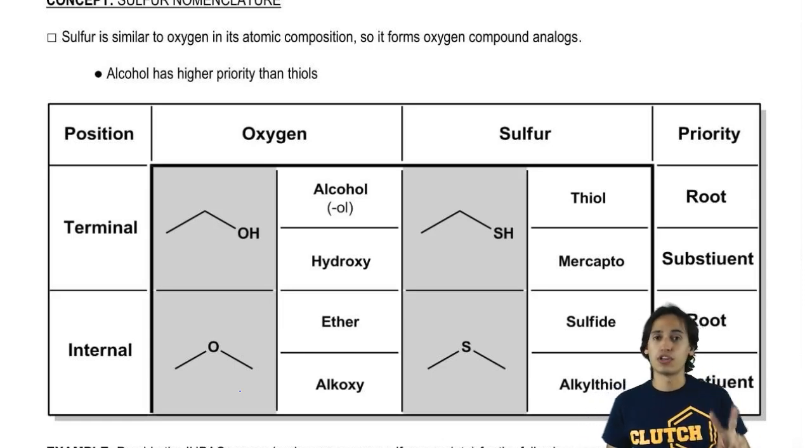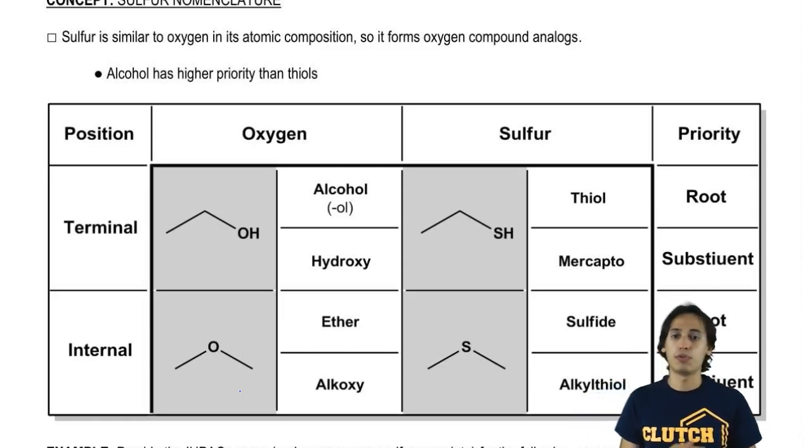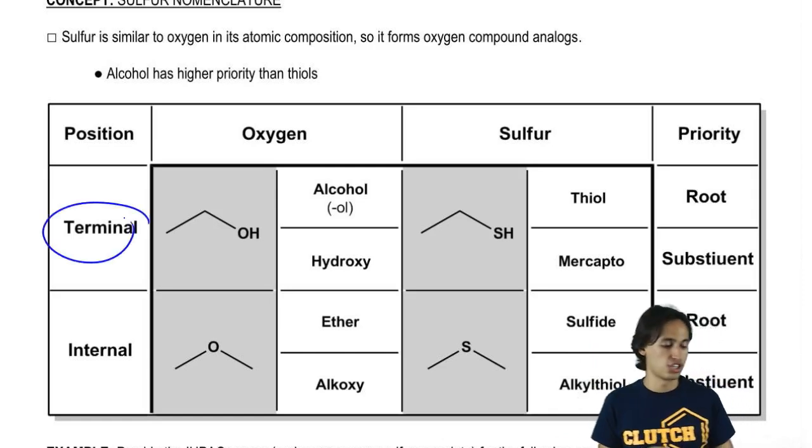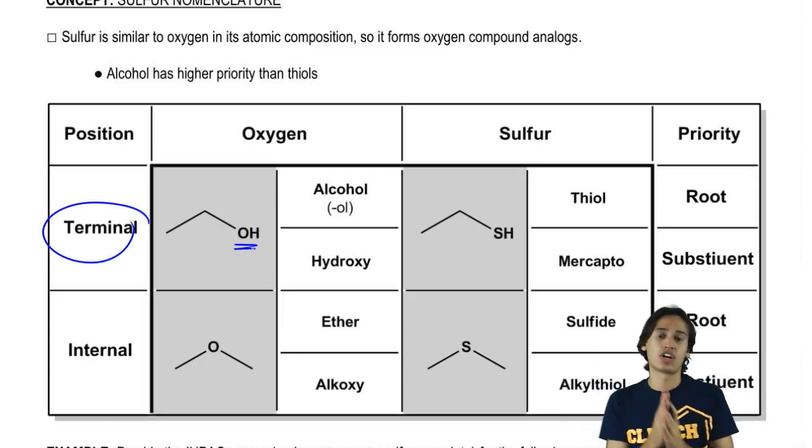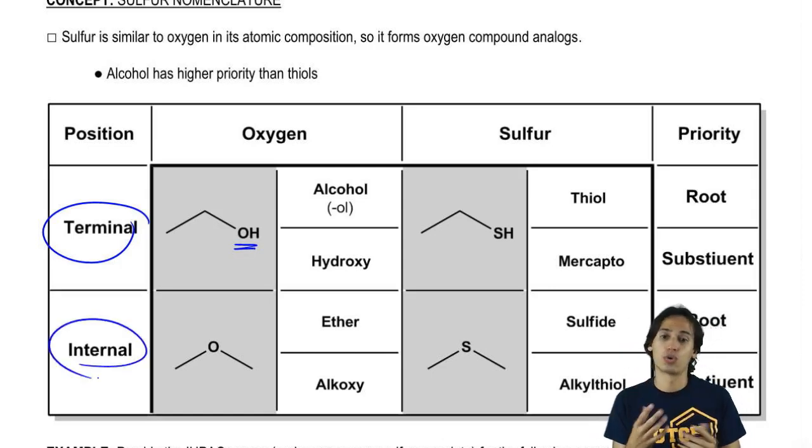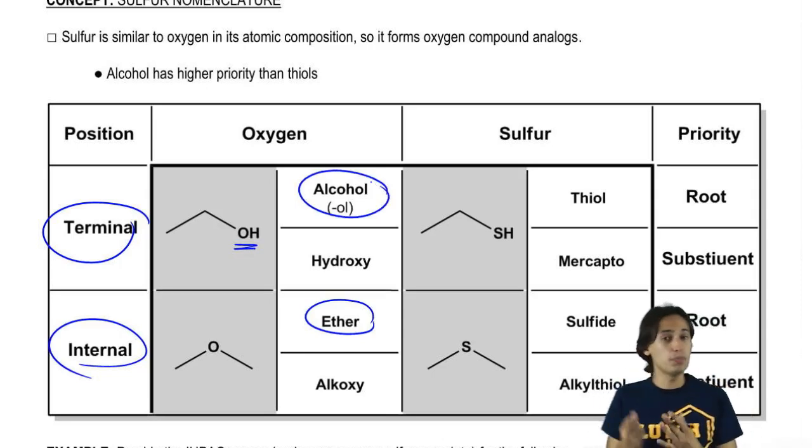It turns out that there are two main functional groups that we've learned to name for oxygen, and that would be alcohols where you have a terminal OH or a terminal oxygen. Notice that it's at the end of the carbon chain. And if you move that oxygen inside the carbon chain, it becomes an internal oxygen or what we call an ether. So hopefully these two names should be familiar to you because these are oxygen-containing compounds.